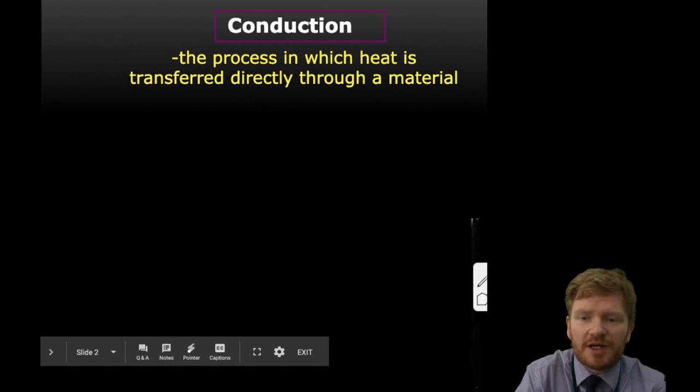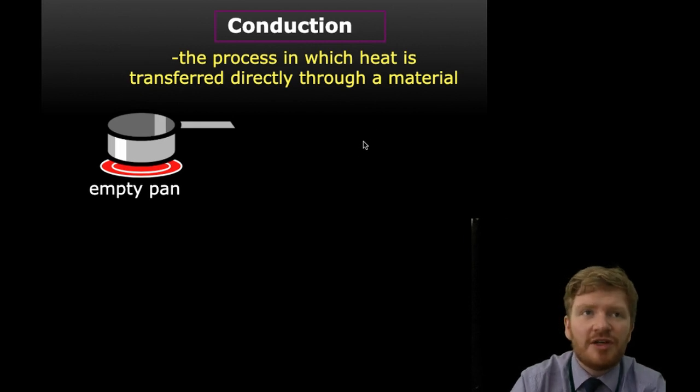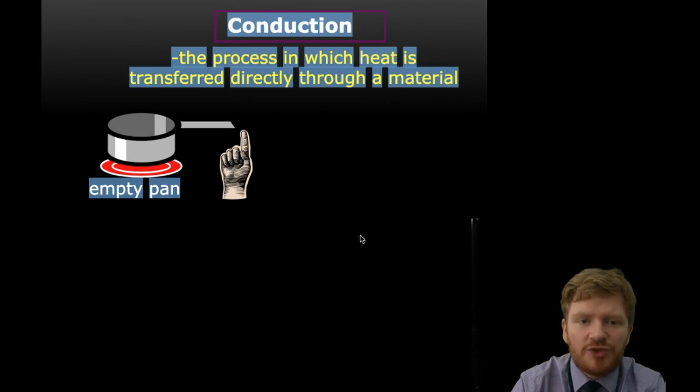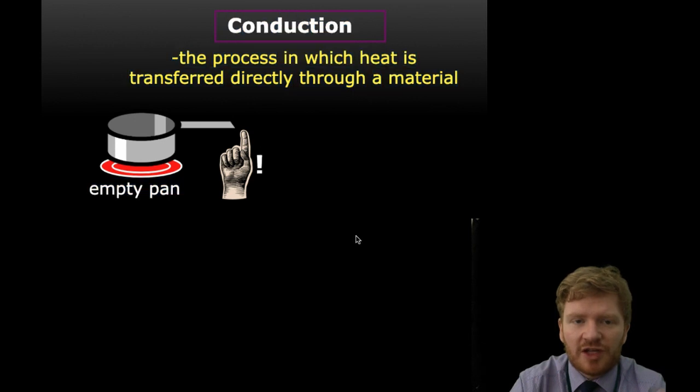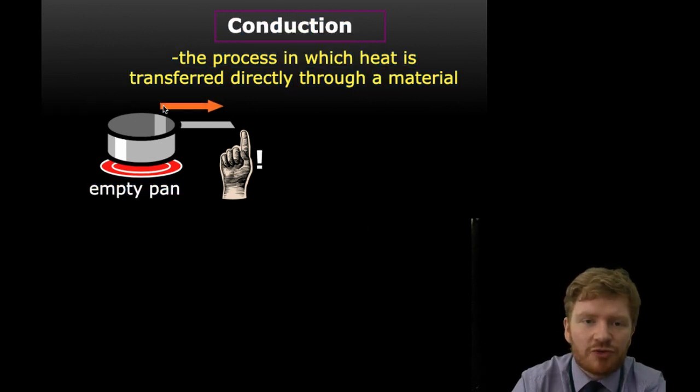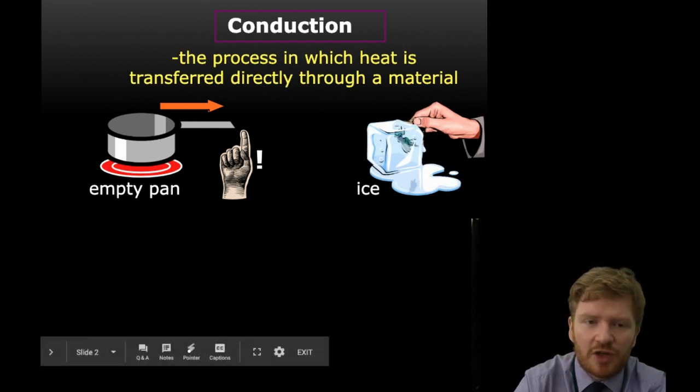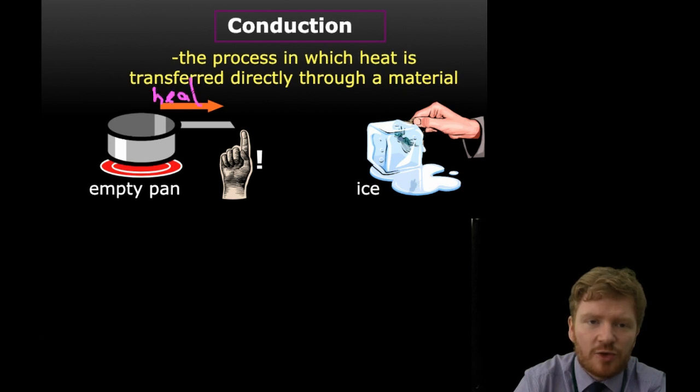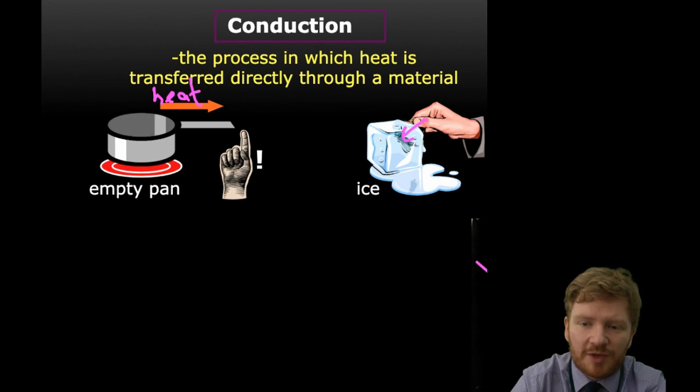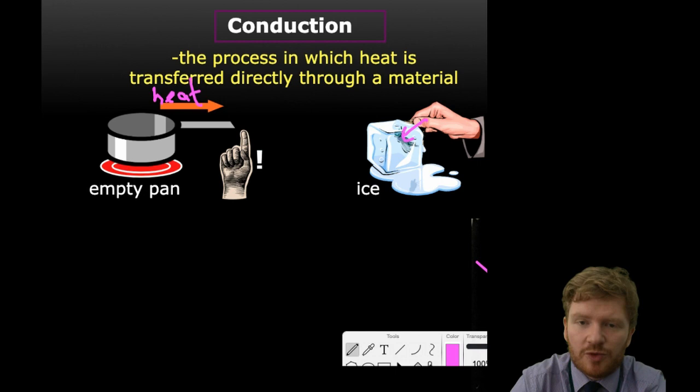Let's start by thinking about what is conduction and how does it work. Conduction is a process in which heat is transferred directly through a material. Imagine you've put an empty pan on the hob and then you touch it. What would you feel? If you remember back to our last lesson, the direction of heat is always from hot to cold, so the heat will transfer into your finger from the material. In this instance, heat will travel from your finger into the ice because heat always goes from hotter to colder.